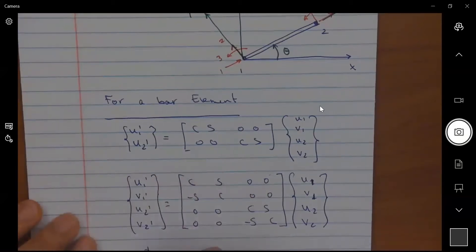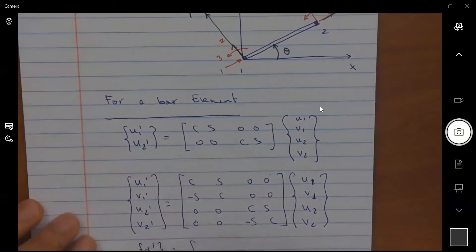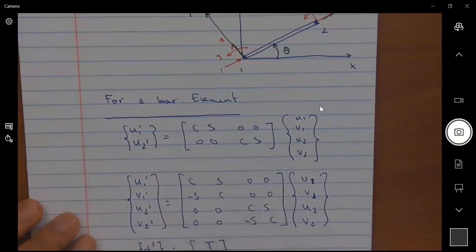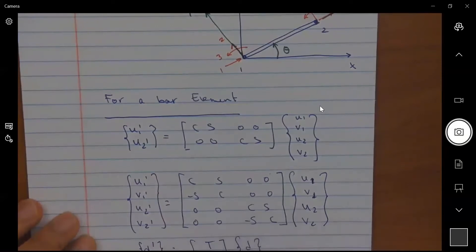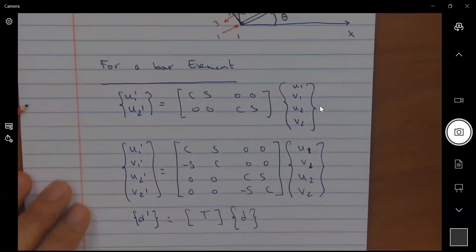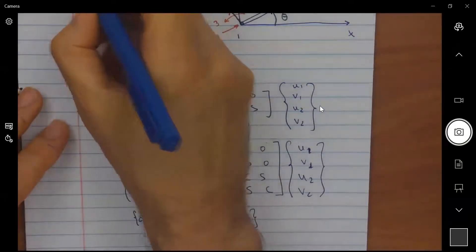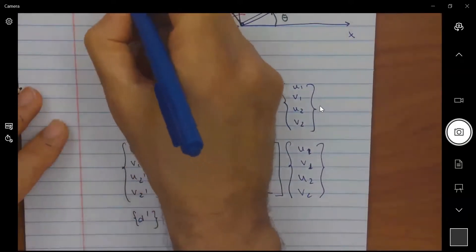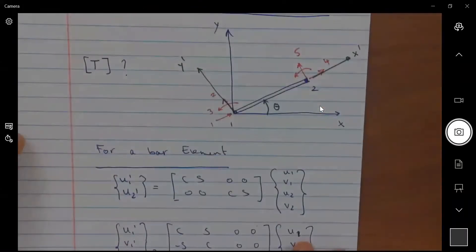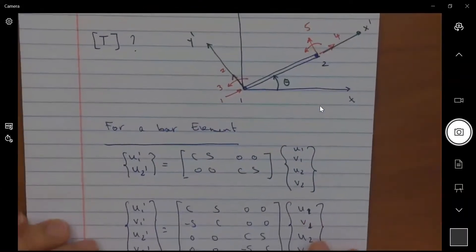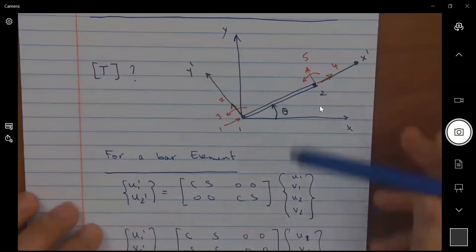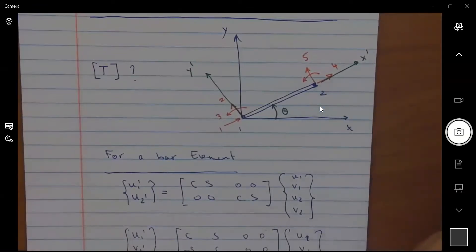And we refer to this as the d prime, a vector in the local axis is equal to some transformation matrix multiplied by d. And now the question is what is T for that frame element?